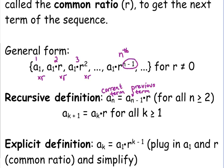You multiply the previous term by the common ratio, and we start counting with N equals 2, because we know the first term. Here, this would be the next term. A sub K plus 1 would be the next term, where A sub K is the current term.